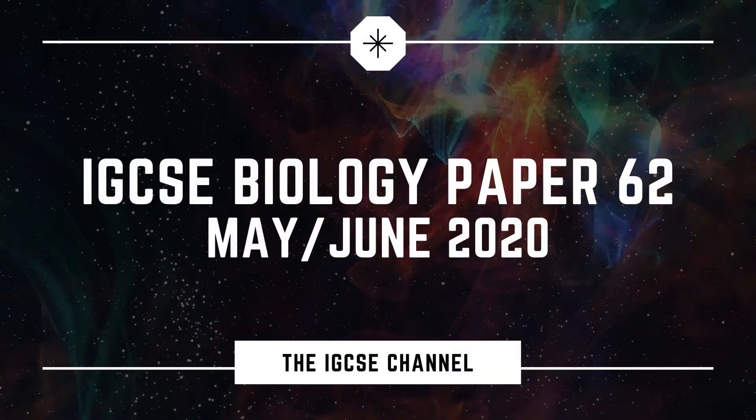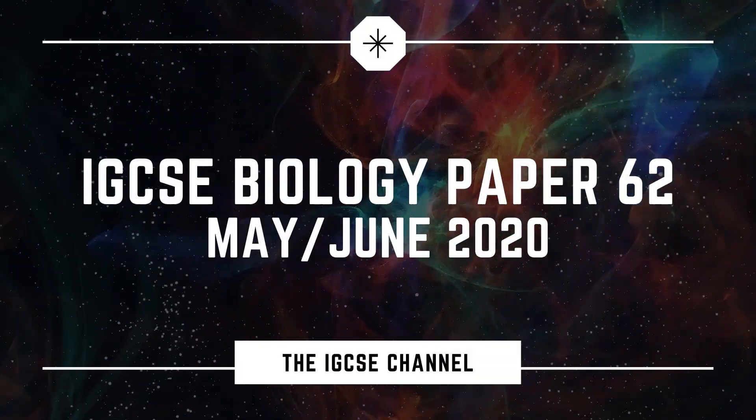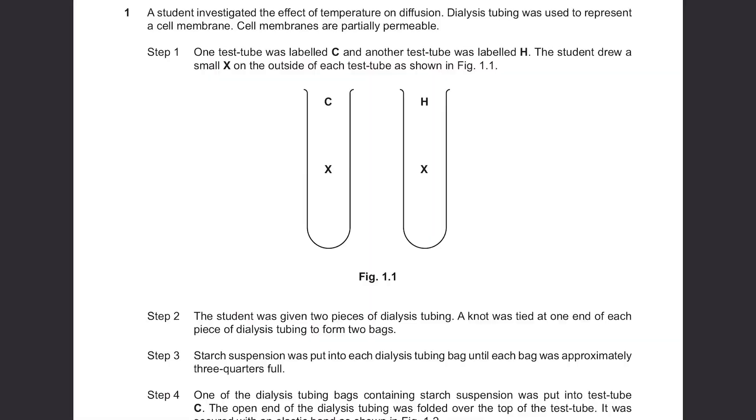Cambridge IGCSE Biology May/June 2020 Paper 62, Question 1. A student investigated the effects of temperature and diffusion. Dialysis tubing was used to represent a cell membrane. Cell membranes are partially permeable.